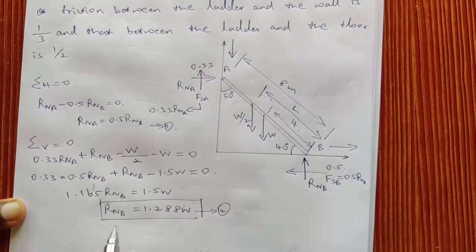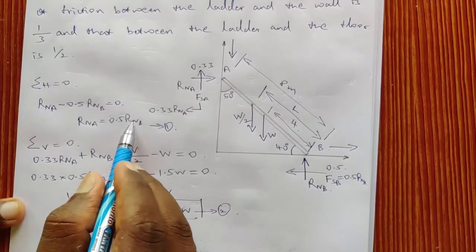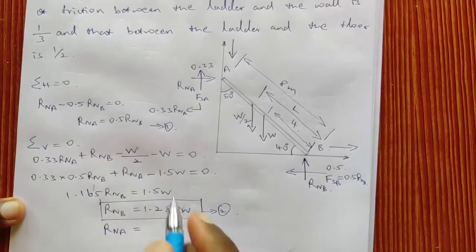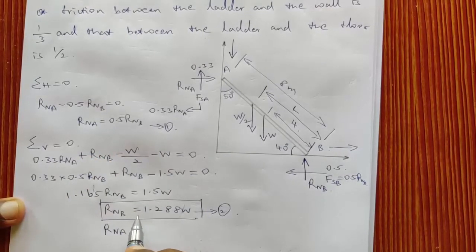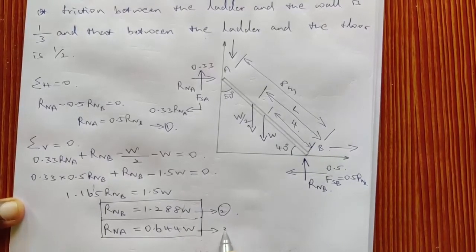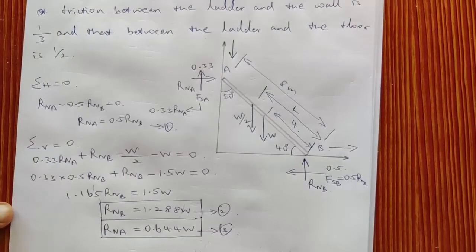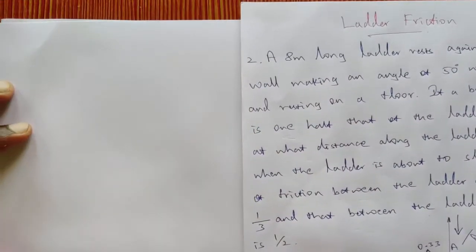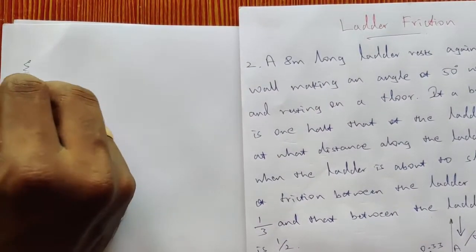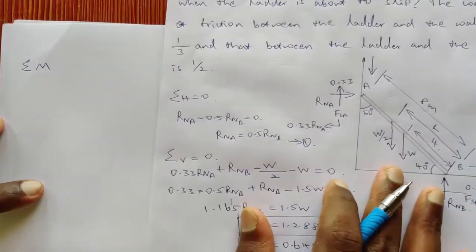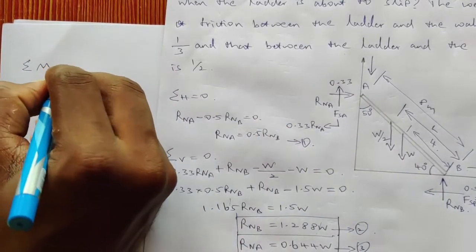Substituting equation 2 into equation 1: RnA equals 0.5 RnB equals 0.5 times 1.288W, so RnA equals 0.644W. This is equation number 3. We are solving the problem in terms of W. The third equilibrium condition is the summation of moments about point B equals zero.